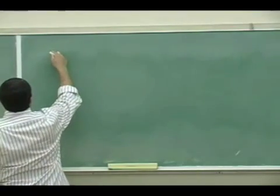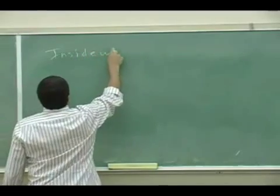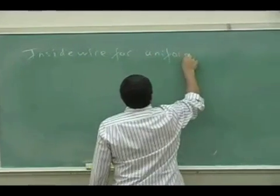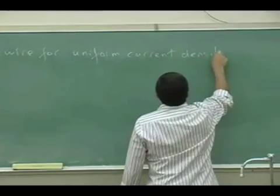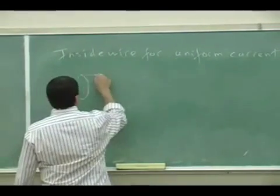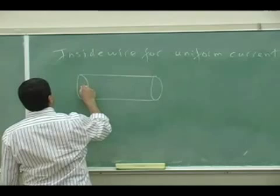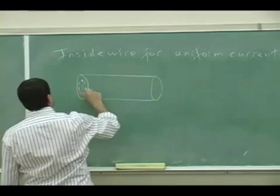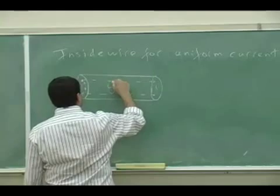So current density, let's say I want to know the magnetic field here, so I get a circle like this and the magnetic field is going to be going like that, loops like that, okay?